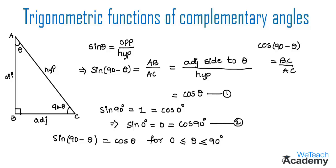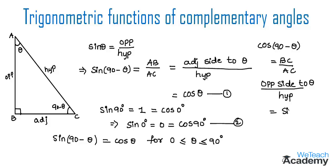BC becomes the opposite side to angle theta. So we can write BC as opposite side to angle theta divided by the hypotenuse side. Opposite side by hypotenuse side is the definition for the trigonometric ratio sine theta. Therefore, cos 90 minus theta is equal to sine theta. Let us name this equation 3.